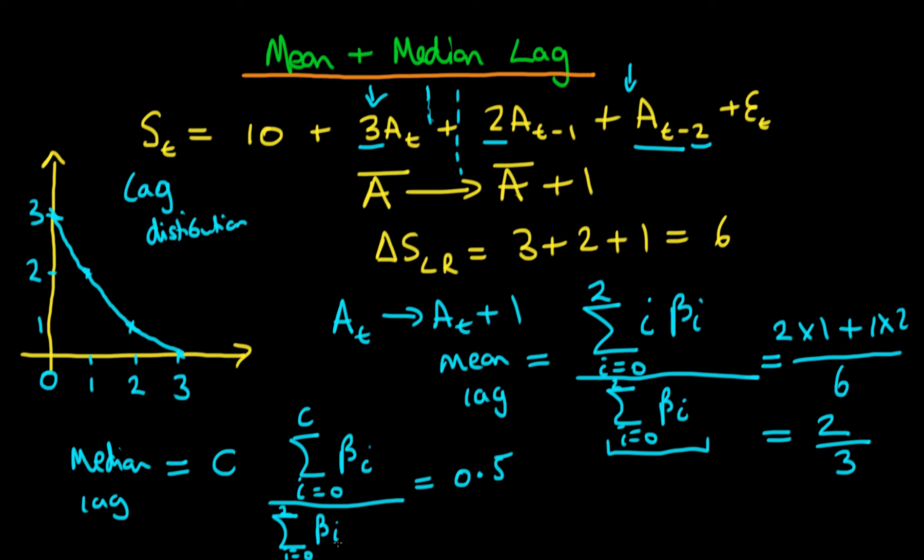Since we already know what this denominator is, we already know what the numerator is. The numerator is just going to be the sum from i equals 0 to c of beta i equals 6 times a half, because when I multiply by this denominator, which is 6, I get 6 times a half, hence this is equal to 3. And we know that the first coefficient is just equal to 3, or in other words the 0 component rather than the first lag component.